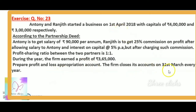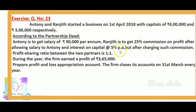The accounting period is 1st April to 31st March. We have to prepare the profit and loss appropriation account, which has debit and credit entries. The credit entry is 3,65,000 per annum. We need to account for Anthony's salary and interest on capital at 5%.